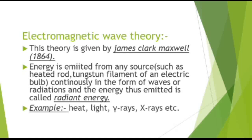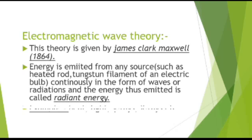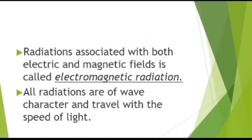Examples of electromagnetic waves include heat, light, gamma rays, and X-rays — these are all examples of radiant energy. Radiations associated with both an electric and a magnetic field are called electromagnetic radiations. All radiations are of wave character and travel with the speed of light.